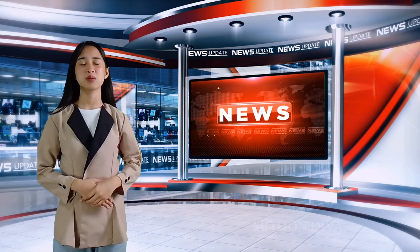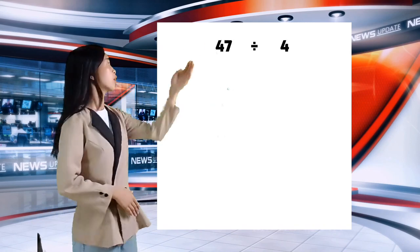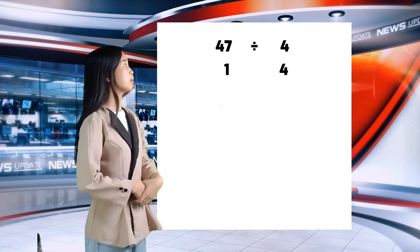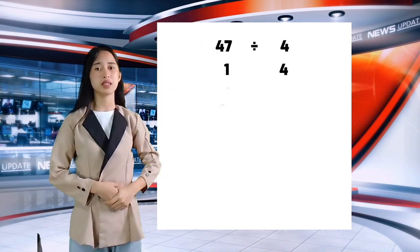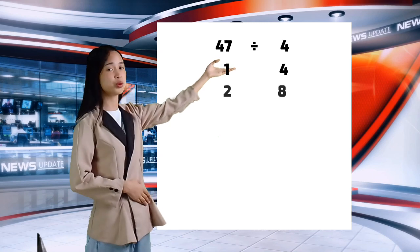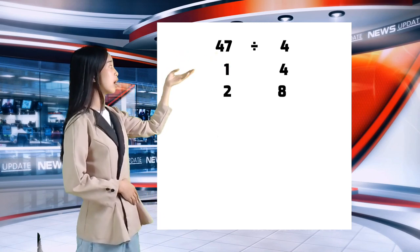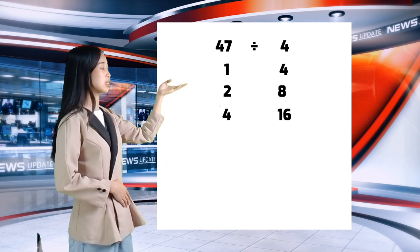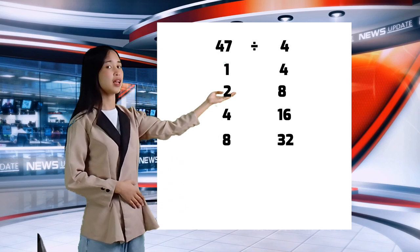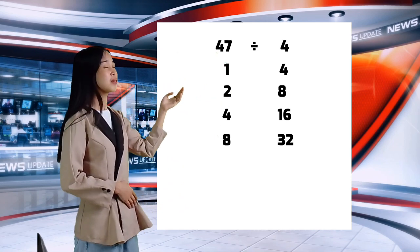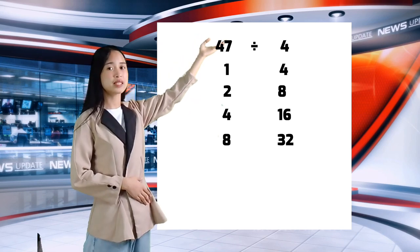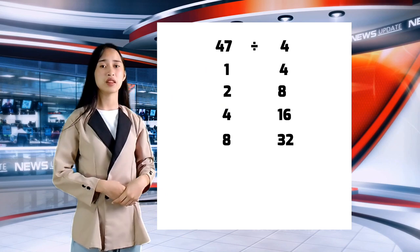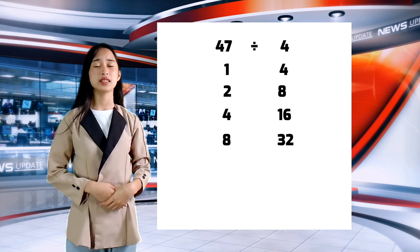For more examples, Ms. Yere will take over. Thank you, Mr. Torres. Now we proceed to our next example: 47 divided by 4. We begin with 1 as our dividend and copy the divisor, which is 4. We begin doubling: 1 plus 1 is 2, 4 plus 4 is 8, 2 plus 2 is 4, 8 plus 8 is 16, 4 plus 4 is 8, 16 plus 16 is 32. Now if we double 32, it will exceed our dividend of 47.